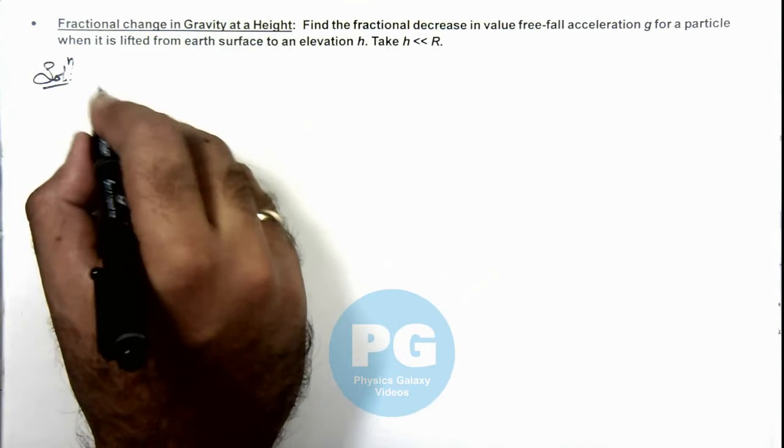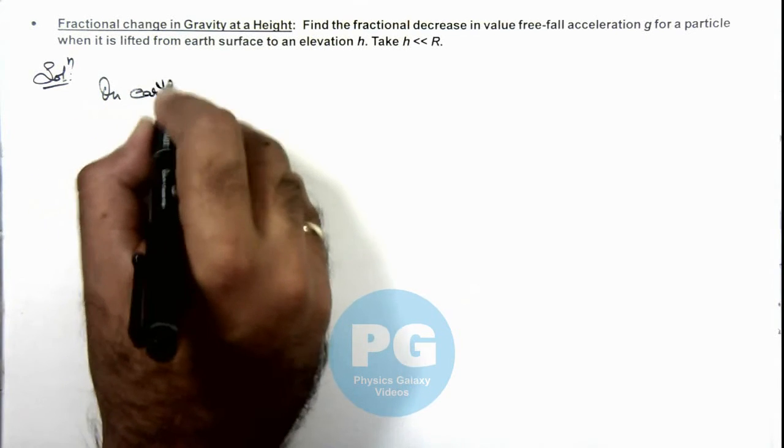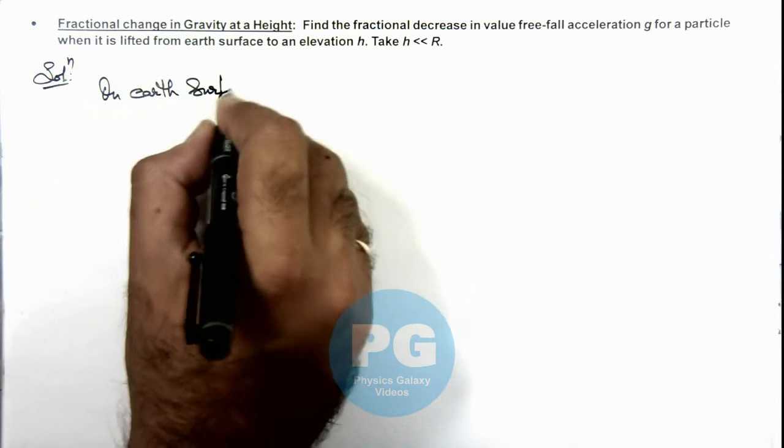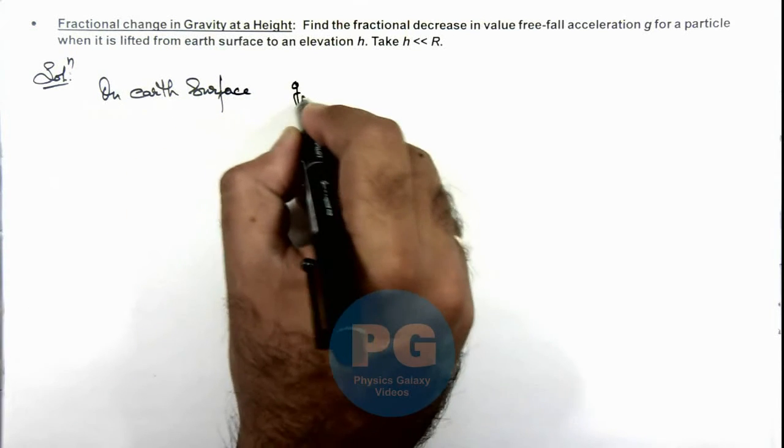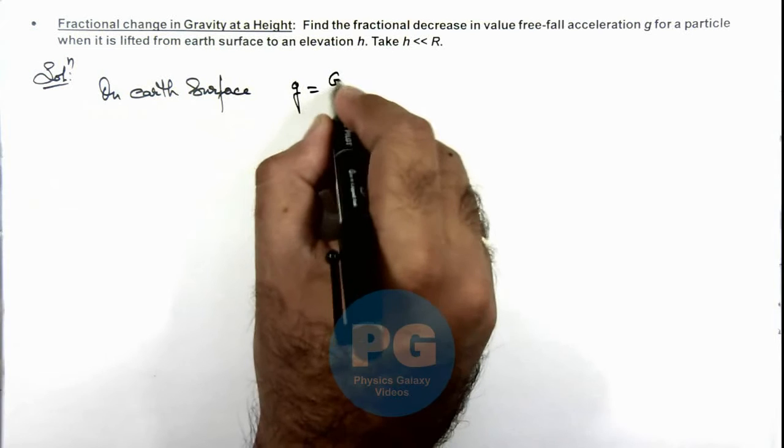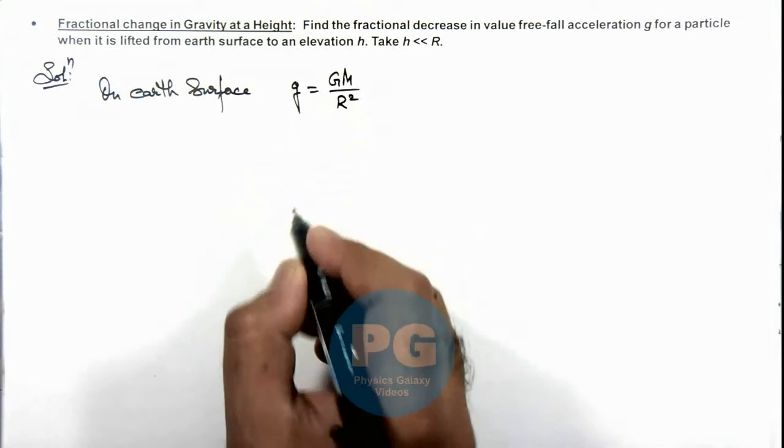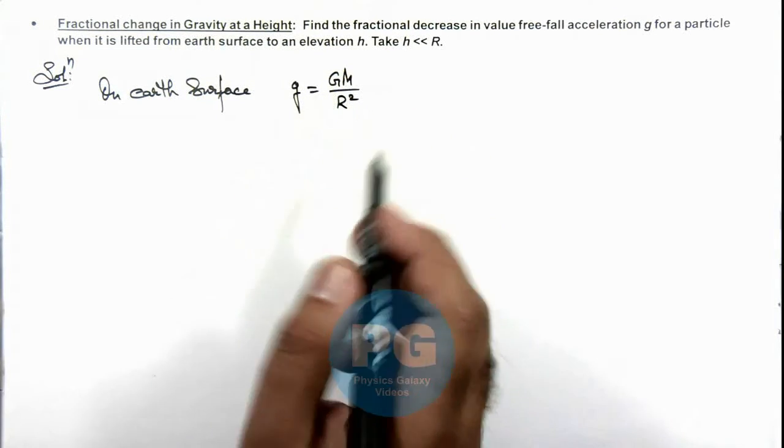So we know well, on earth surface, the value of acceleration due to gravity is g = GM over R square, where M is mass of earth and R is the radius of earth.